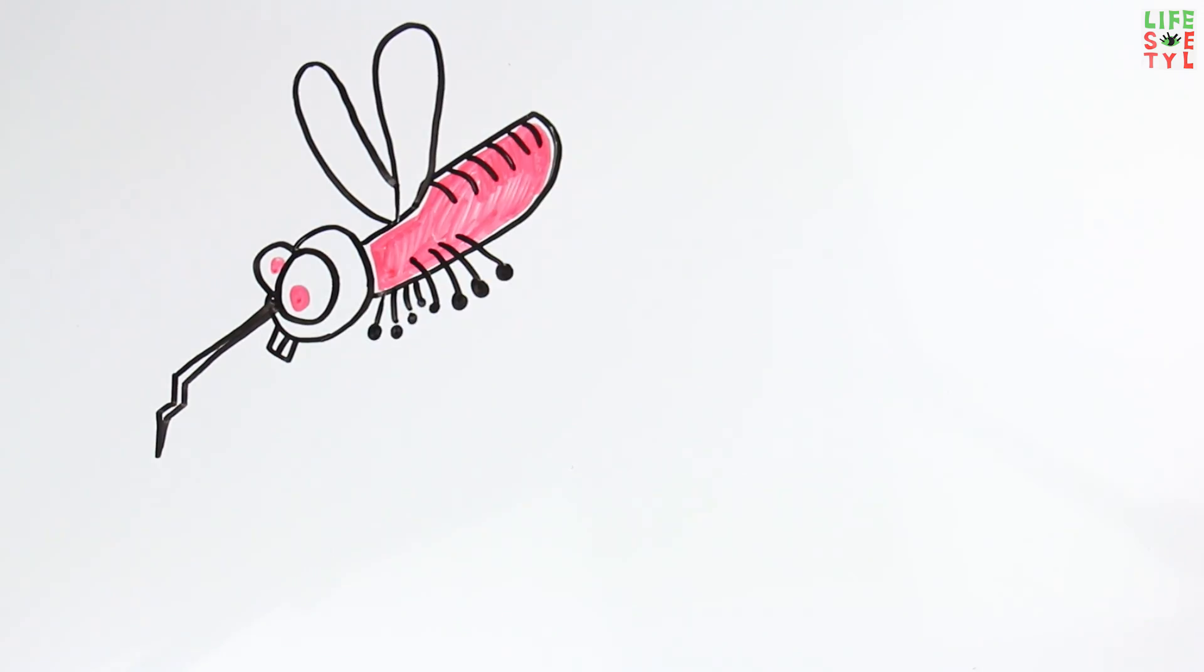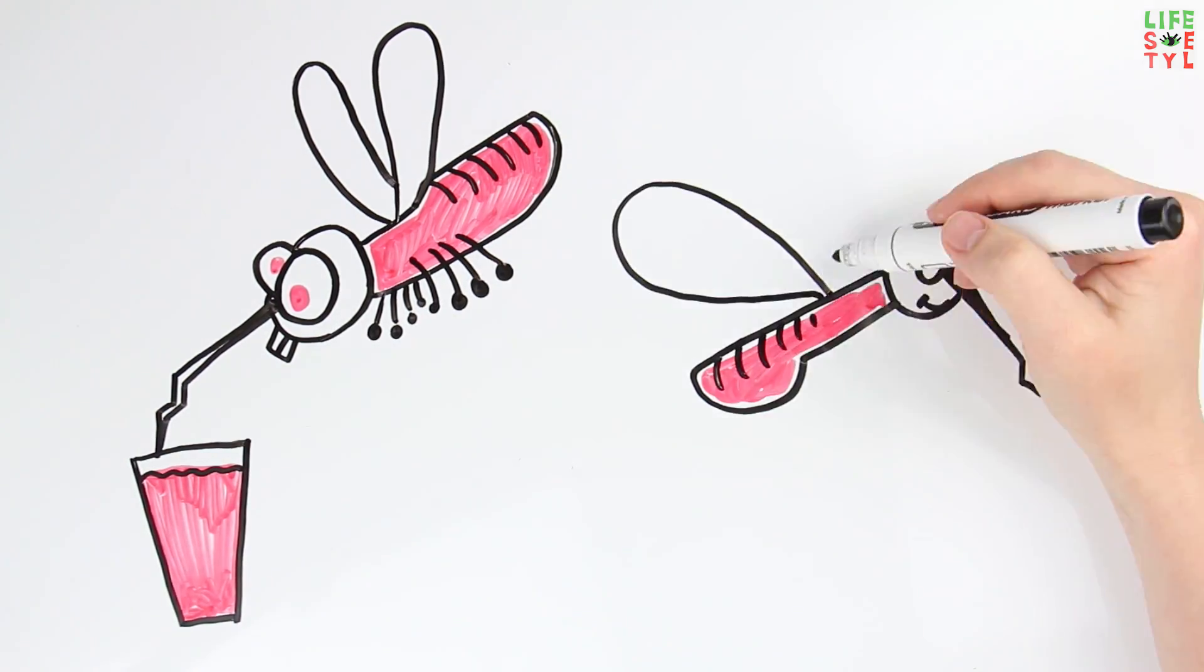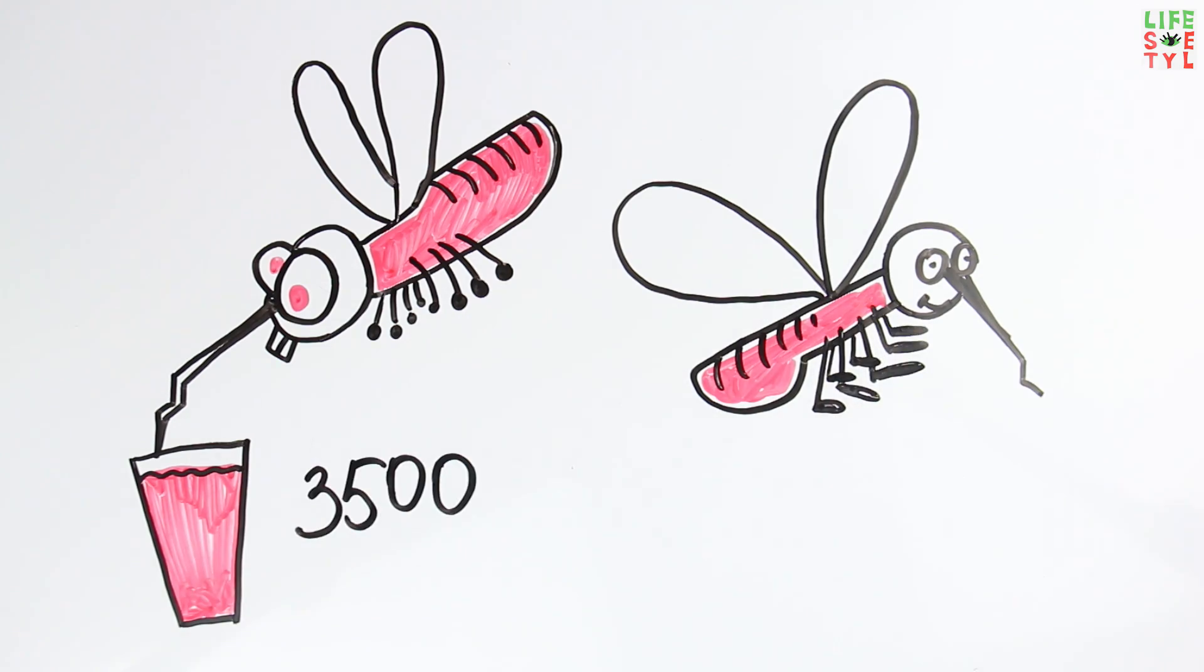The family of blood-sucking mosquitoes alone includes more than 3,500 species, among which approximately 40 species transmit malaria.